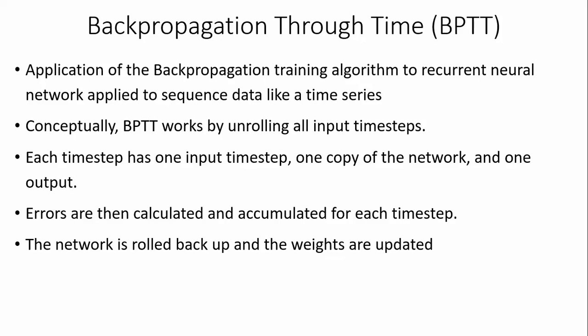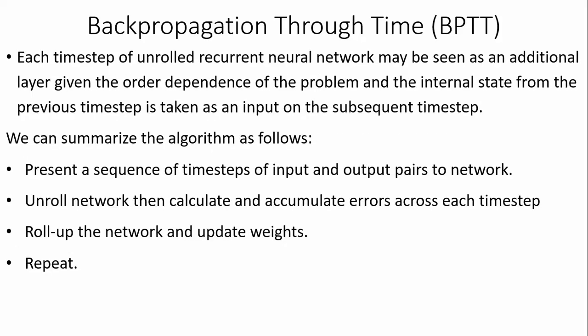Each step has one input time step, one copy of the network, and one output. Errors are calculated and accumulated for each step. These are then rolled back through the recurrent neural network, like in normal feed-forward networks. To minimize the loss function in recurrent neural networks, weights are updated — but they are updated by rolling back through the network. Summarizing BPTT: first, present a sequence of time steps with input and output pairs; then unroll the network; then accumulate errors through each step; then roll back the network and update the weights. This procedure repeats until the error value is minimized, like in normal feed-forward backpropagation.